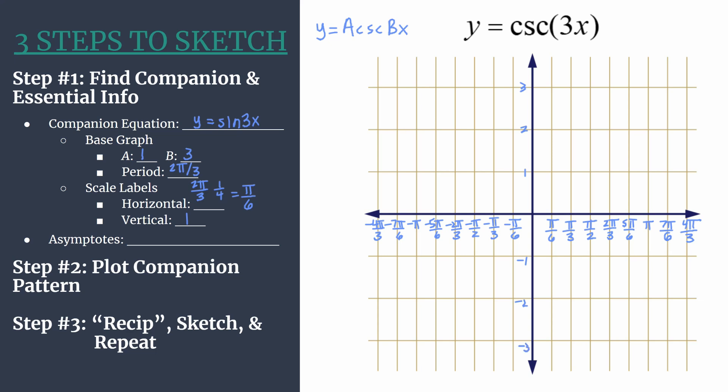Before we move on to plotting this companion equation, I like to find the asymptotes for the cosecant equation. Because the zeroes of sine are linked to the vertical asymptotes of cosecant.